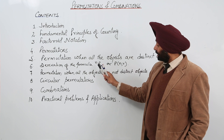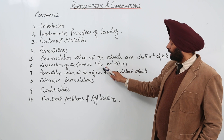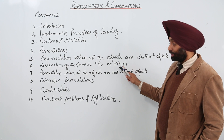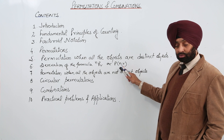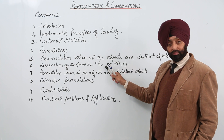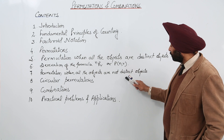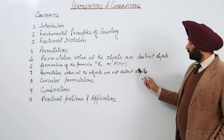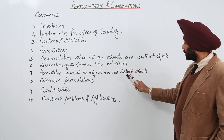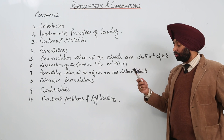Derivatives of the formula: this is N on the head of P and R on the base of P, or it can be written like this also. So this is the formula for permutation. Then permutation when all the objects are not distinct objects, and this we are going to use with the formulas.